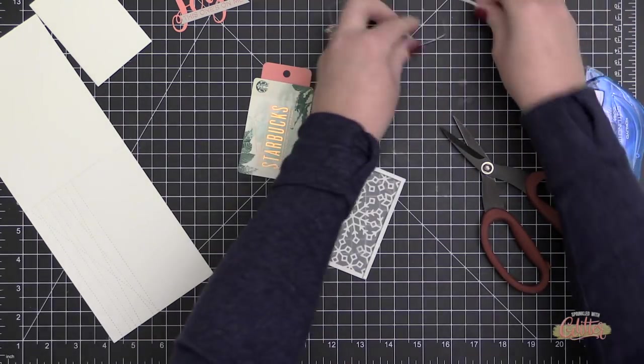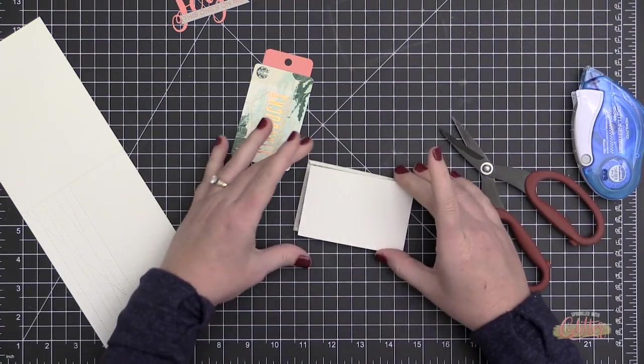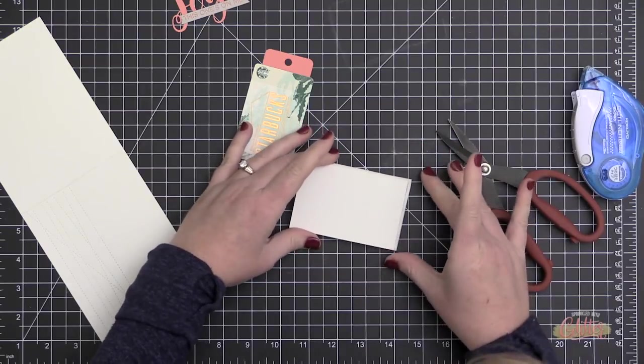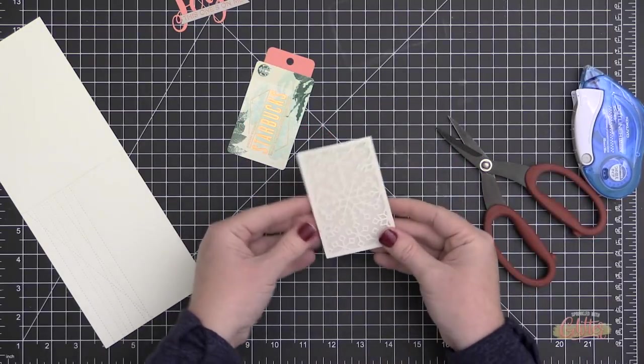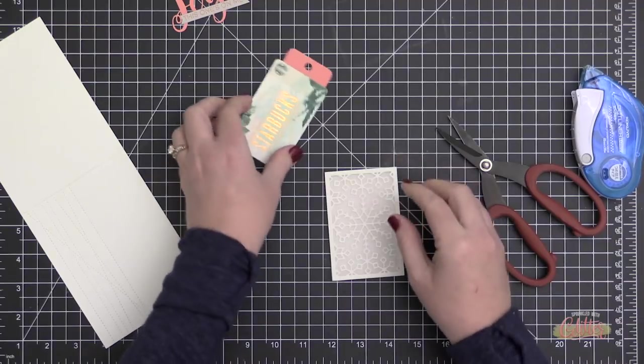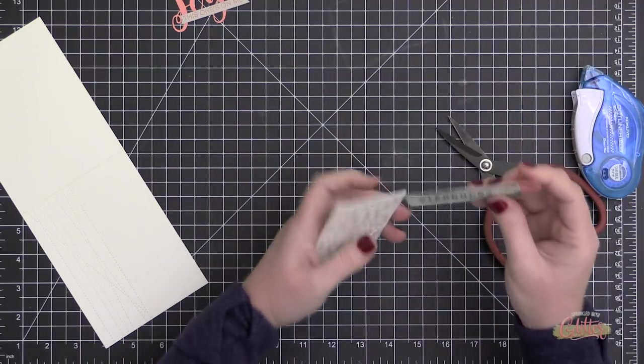Now I guess technically you could adhere this directly onto your card base and it could be a pocket, but I wanted it to be nice and sturdy. So once again I'm removing the backer on that foam adhesive and I'm attaching that white rectangle of cardstock behind that to make it a little more sturdy.